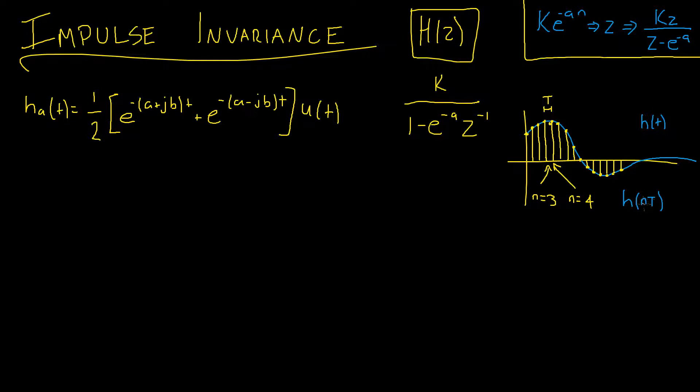So let's make the substitution nt in for our continuous time t in our analog filter here, and then we'll take the Z transform.